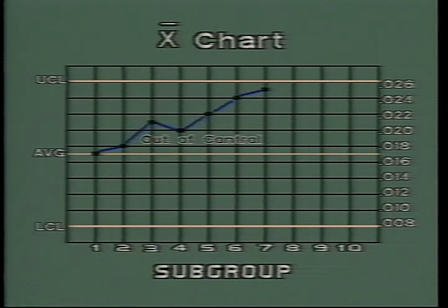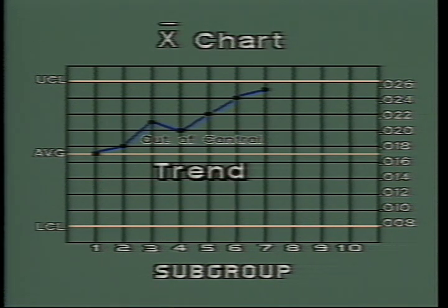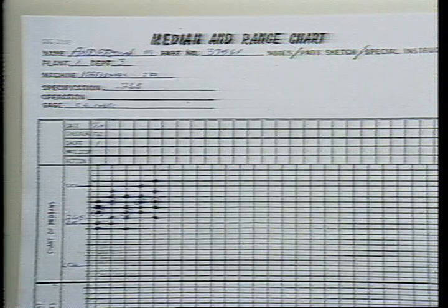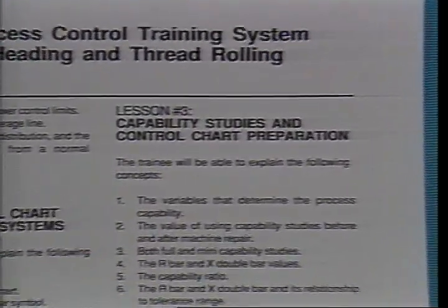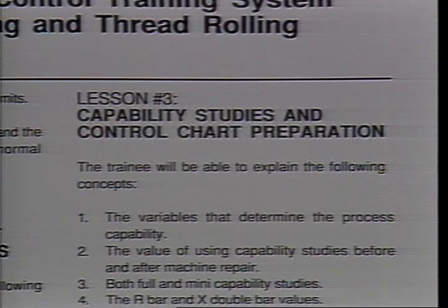The third indicator of a process going out-of-control is called a trend. If a series of seven or more points show a steady movement toward either the upper control limit or the lower control limit, it is time to look for the problem. There is another type of control chart that may be used in your shop. This explains how the control limits are calculated for each type of SPC control technique.